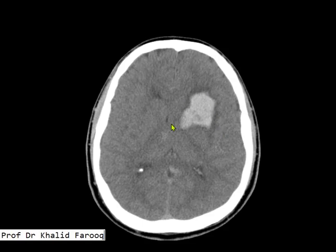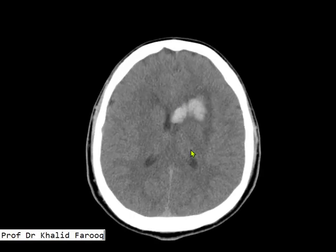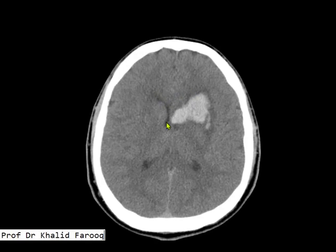involving the left periventricular region. There is involvement of the left basal ganglia, part of the external capsule, and the anterior limb of the internal capsule. The peripheral low density area represents edema. We can see the frontal horn of the right lateral ventricle,